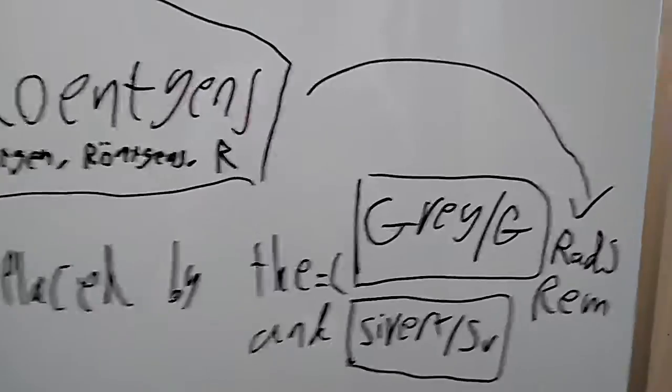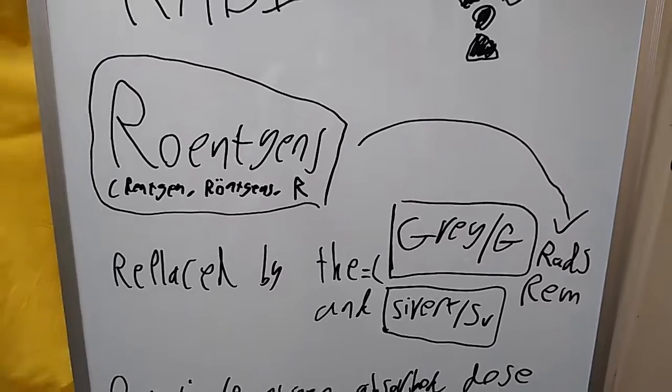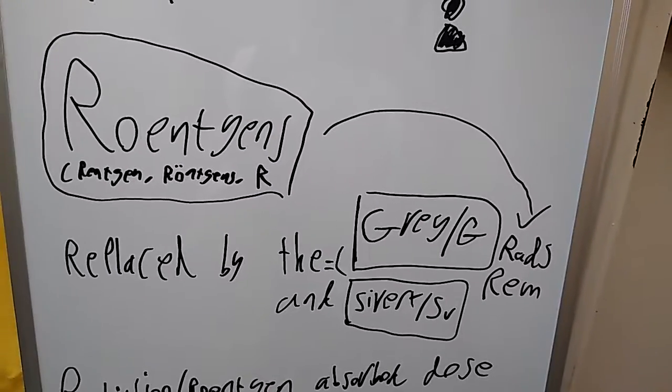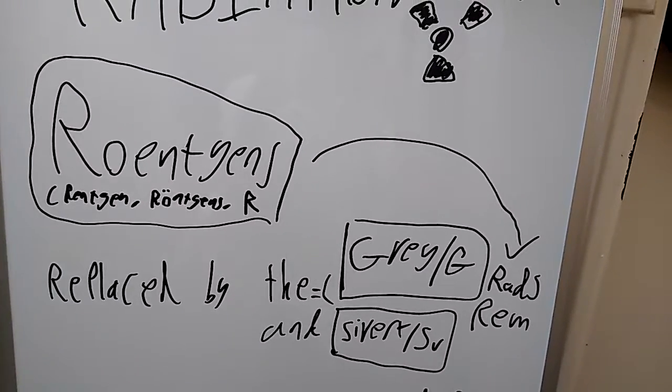So, basically, the Gray and the Sievert replaced the Röntgen, or the Roentgen, because the Röntgen is the amount of air that's being ionised. One Röntgen equals one cubic centimetre of air being ionised. Also, a fun little bit of trivia, the Gost Röntgen and the Western equivalent of the Röntgen are both different units.